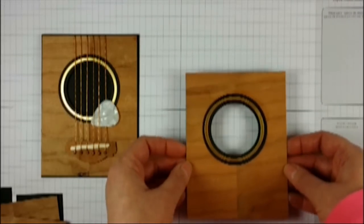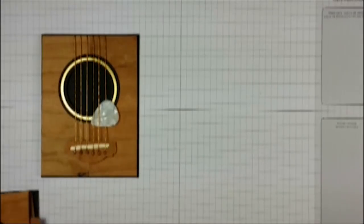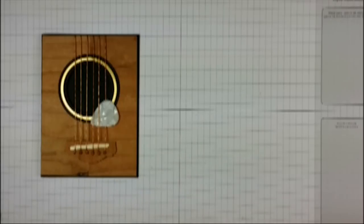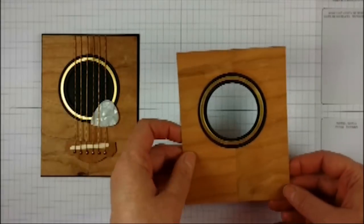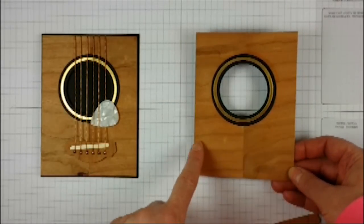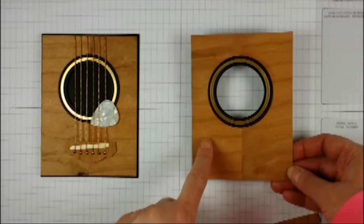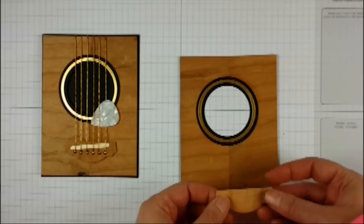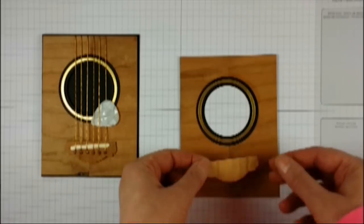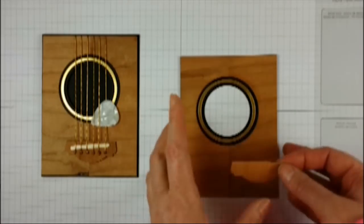Next we're going to move on to the bridge. The veneer on the face of the card runs horizontally, but the bridge I wanted to run vertically so that it stands out.